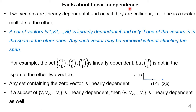Let us understand some facts about linear independence. The first fact is: two vectors are linearly dependent if and only if they are collinear. For example, taking two vectors (1, 0) and (2, 0) — they are in a straight line. I can obtain the second vector by multiplying the first vector by 2, so they are linearly dependent. That is, by multiplying one vector with a scalar quantity, I can get the second vector.